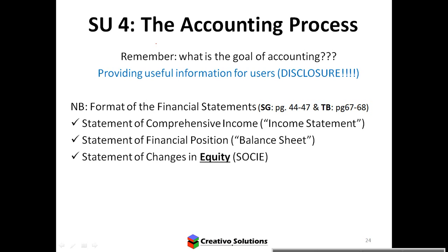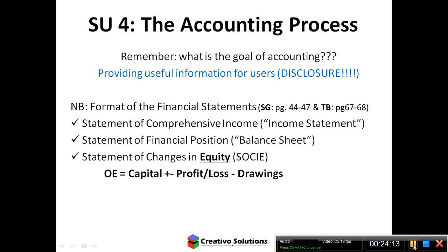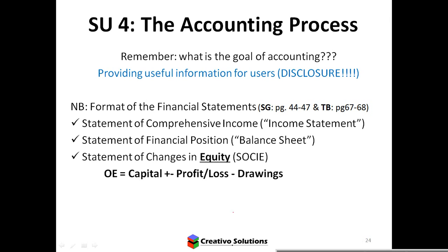The focus is always decision making. Disclosure means presentation or layout — what the actual statement looks like. Refer to your study guide for example statements to see how they look in terms of presentation of information. The formula for owner's equity is: OE = Capital + minus Profit/Loss minus Drawings. Equity is exactly what the owner is entitled to — what the owner actually has in terms of worth in the business.